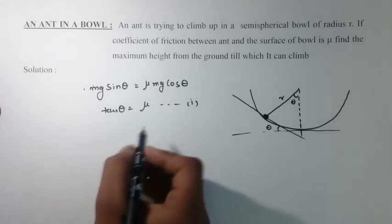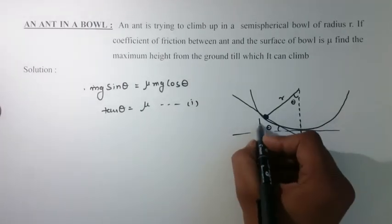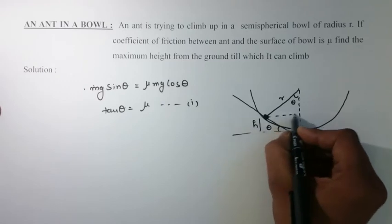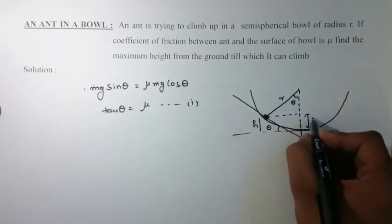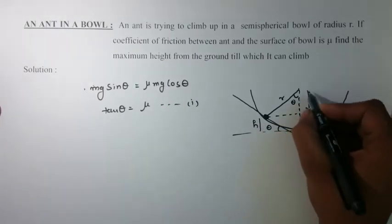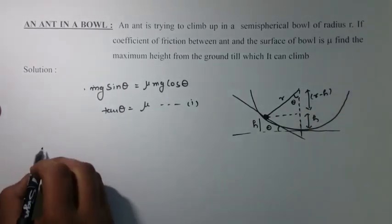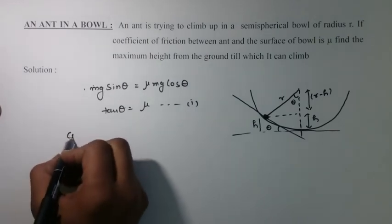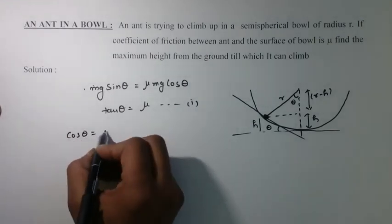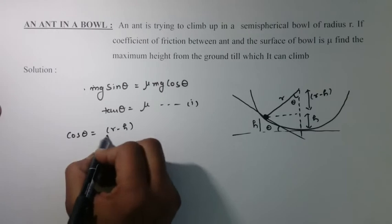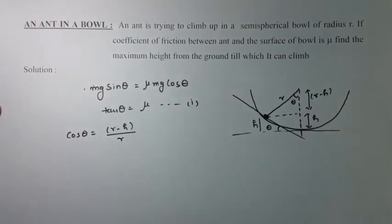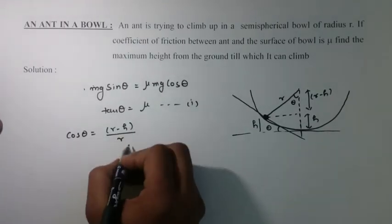Now we have to find this height h. This would be r minus h. Now from Pythagoras theorem, cos theta would be equals to r minus h upon r, base upon hypotenuse.